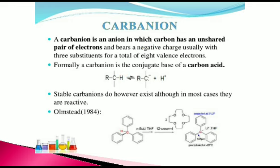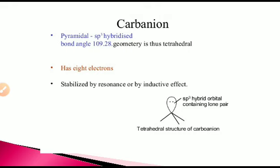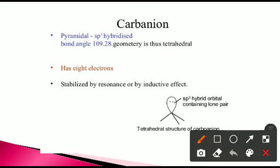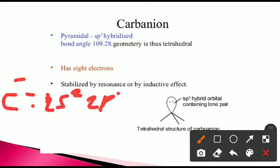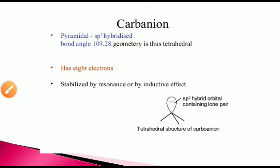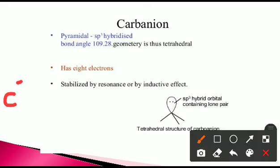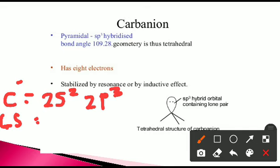The stable carbanions do exist, although in most cases they are reactive. The carbanion is pyramidal in shape with sp3 hybridization. The carbon ion having a negative charge: the balanced electronic configuration of carbon is 2s2 and 2p2, but for C minus, the configuration becomes 2s2 and 2p3.